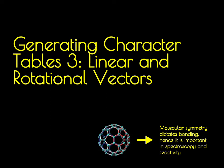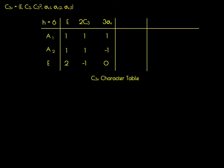In this video, we're going to continue learning how to construct character tables by focusing on construction of the linear and rotational vectors for a group. As with previous videos, we'll be focusing on the C3V point group. In previous videos, we learned how to group the six symmetry operations into classes, and then how to construct irreducible representations. In this video, we're going to learn how to construct the linear and rotational vectors and assign them to their respective irreducible representations.